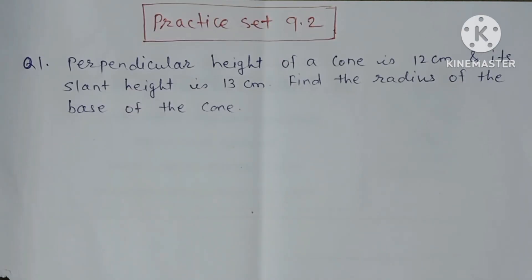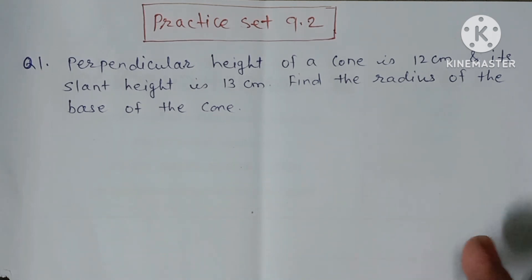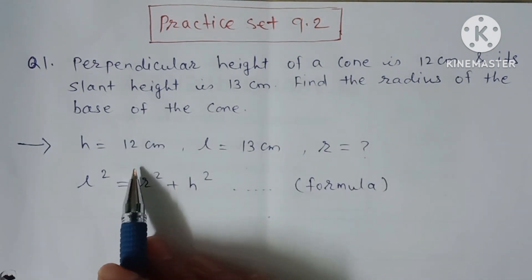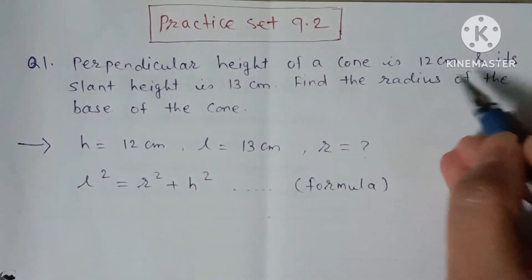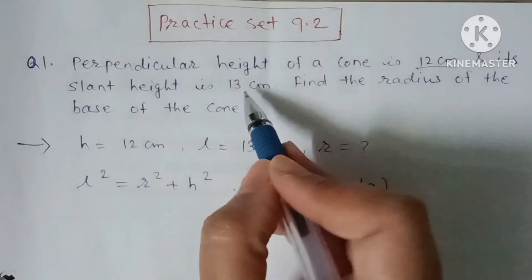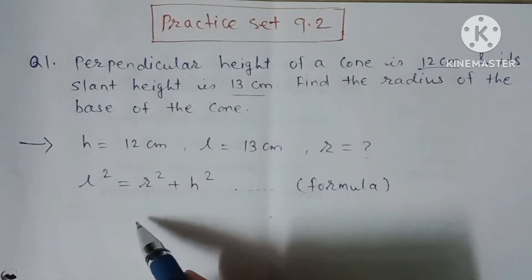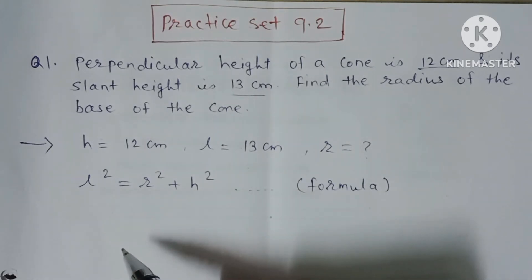Question No. 1: The perpendicular height of a cone is 12 cm and its slant height is 13 cm. Find the radius of the base of the cone. Here h is given as 12 cm, slant height l is given as 13 cm, and we need to find the radius. We use the formula: l² = r² + h².